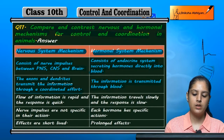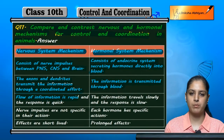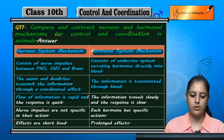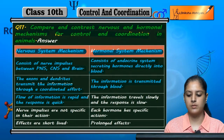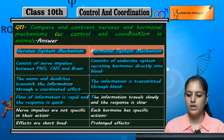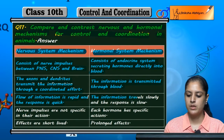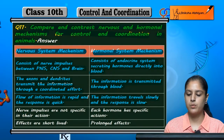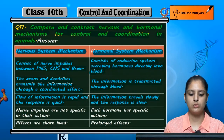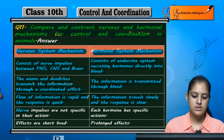In the nervous system, the flow of information is rapid and the response is very fast.